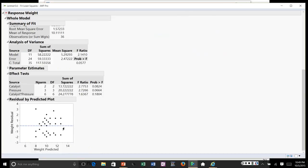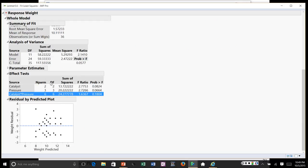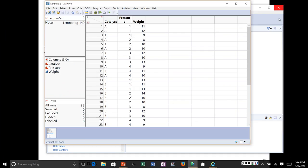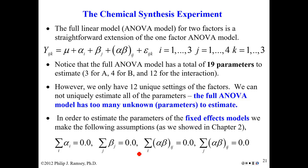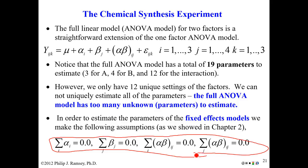Looking at the results, JMP provides a breakdown showing the sum of squares for catalyst, the sum of squares for pressure, and the sum of squares for the interaction, each with their corresponding degrees of freedom. This is how one analyzes a factorial experiment using ANOVA when both factors are nominal.